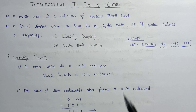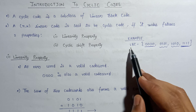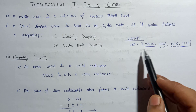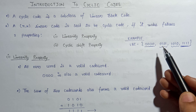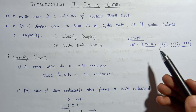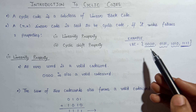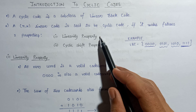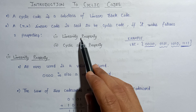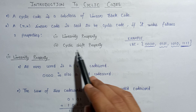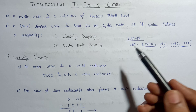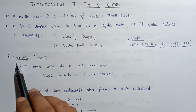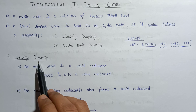We need to identify whether this linear block code is a valid cyclic code or not. We will identify this by the help of the two properties: the linearity property and the cyclic shift property.